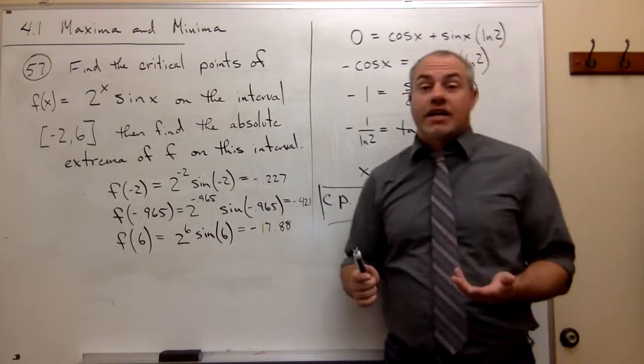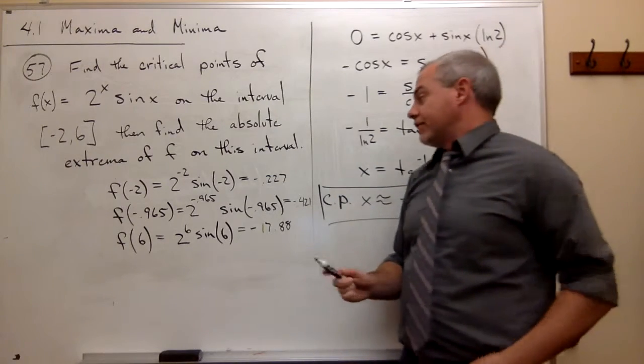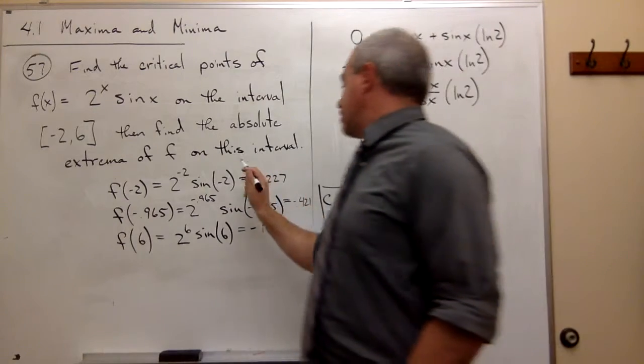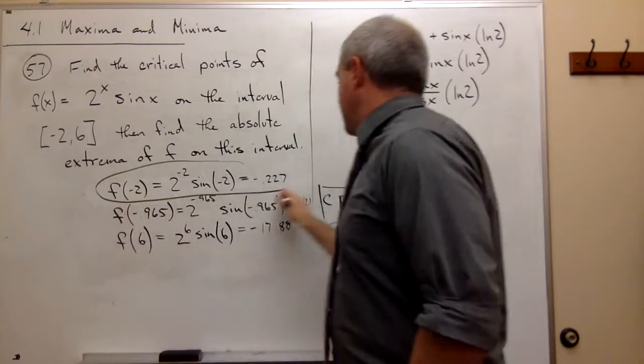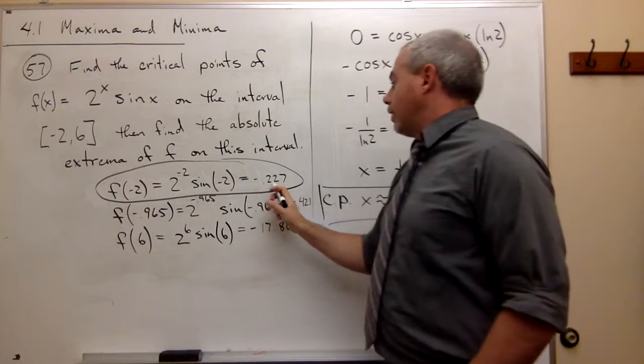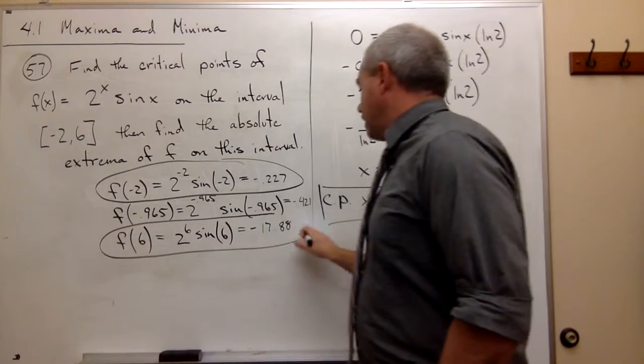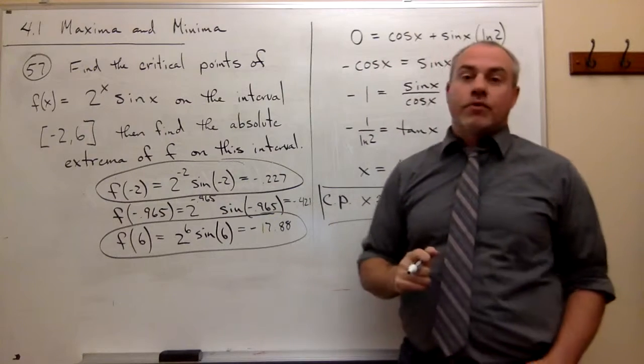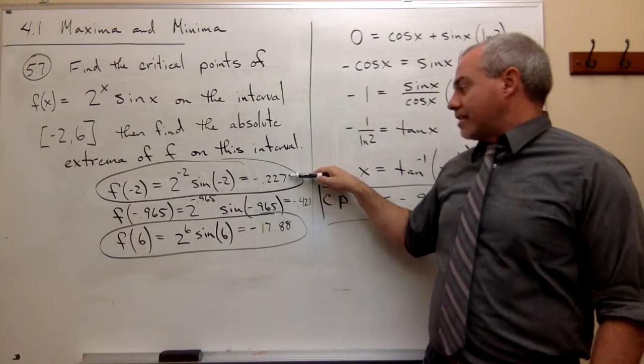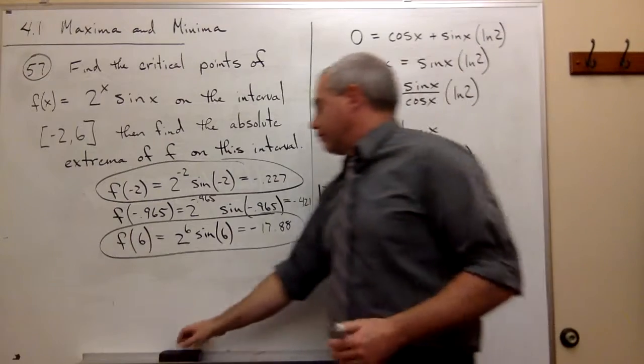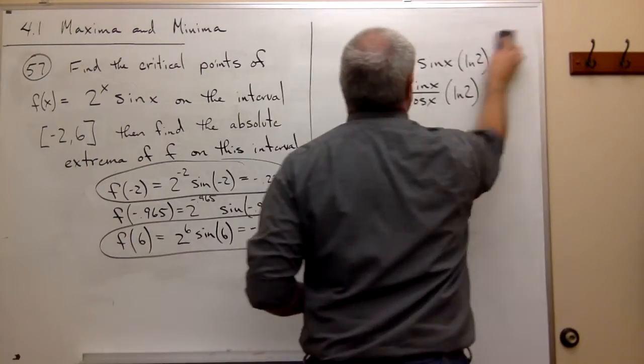So now we just need to ask the question, which of these is the biggest? Which of these is the smallest? The biggest one is here, negative 0.227. And the smallest one is right here, negative 17.88. So we've got our absolute maximum, and we've got our absolute minimum. We just need to write this down.